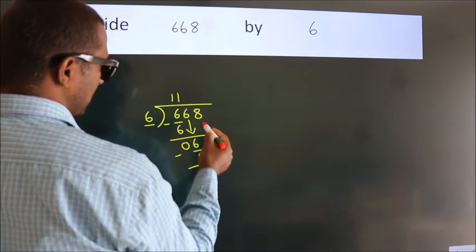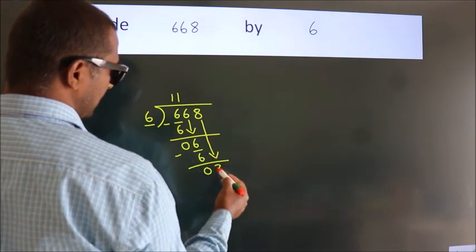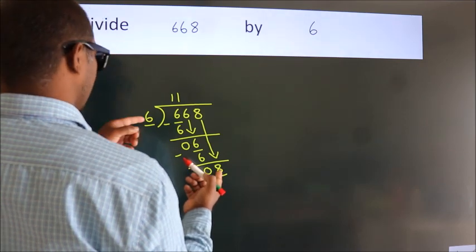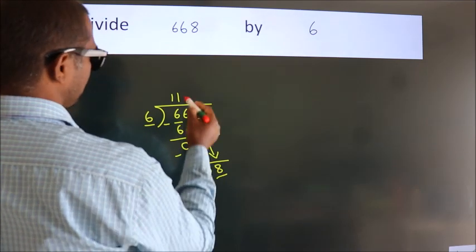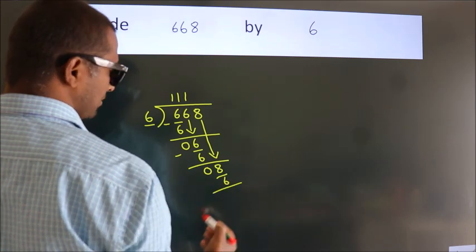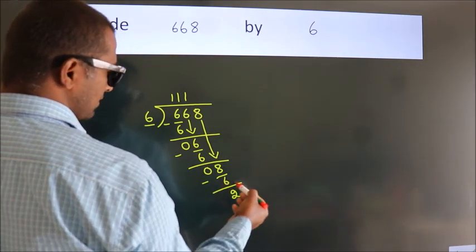After this, bring down the beside number. So 8 down. A number close to 8 in 6 table is 6 once, 6. Now we subtract. We get 2.